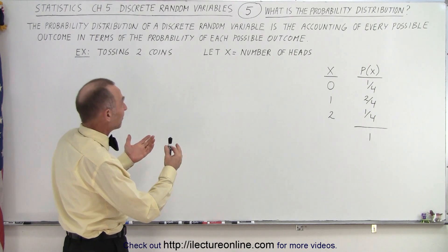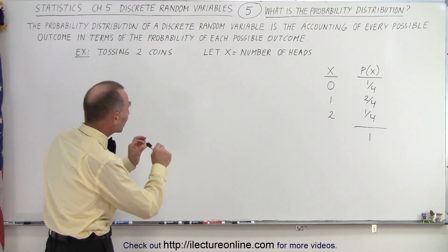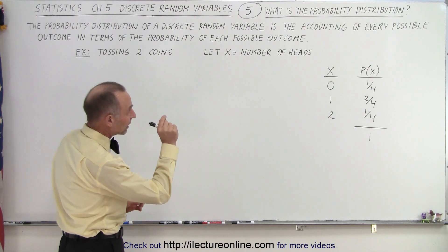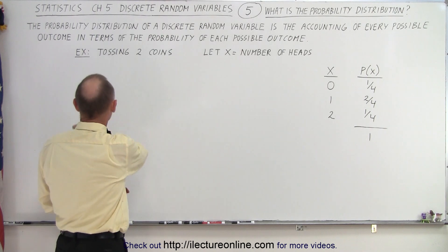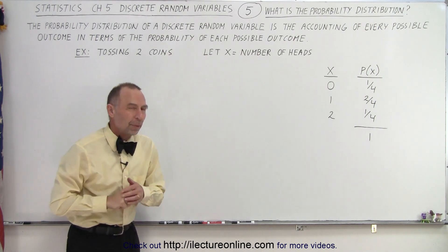And so what is that? Well, it turns out, if we read the definition, the probability distribution of a discrete random variable is the accounting of every possible outcome in terms of the probability of each of those possible outcomes.